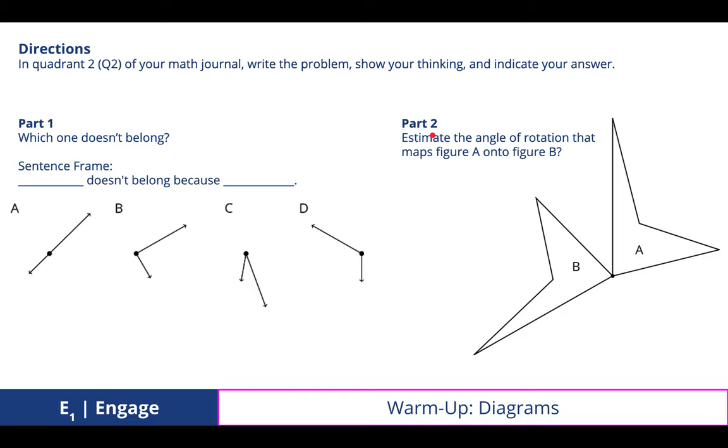This helped us with part two, when we estimated the angle of rotation that maps figure A onto B. We were able to find this by selecting corresponding sides of each figure and noticing that it created an obtuse angle at 120 degrees.